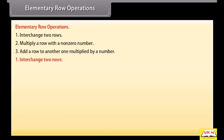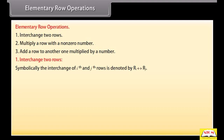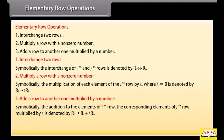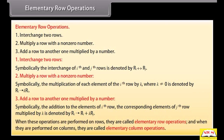Interchange two rows: Symbolically, the interchange of the i-th and j-th rows is denoted as shown. Multiply a row with a non-zero number: Symbolically, the multiplication of each element of the i-th row by k, where k ≠ 0, is denoted as shown. Add a row to another one multiplied by a number: Symbolically, the addition to the elements of the i-th row of the corresponding elements of the j-th row multiplied by k is denoted as shown. When performed on rows, these are called elementary row operations; when performed on columns, they are called elementary column operations.